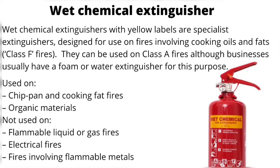Wet chemical extinguishers with yellow labels are specialist extinguishers designed for use on fires involving cooking oils and fats — Class F fires. They can also be used on Class A fires, although businesses usually have a foam or water extinguisher for this purpose. Used on chip pan and cooking fat fires, and organic materials. Not used on flammable liquid or gas fires, electrical fires, or fires involving flammable metals.